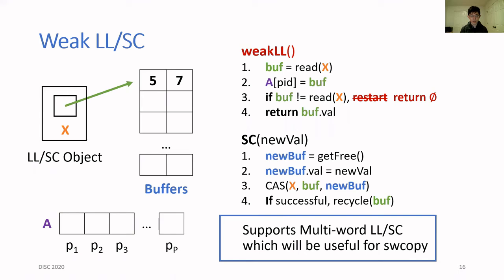Notice that if we find out on line 3 that the current value of X is different from the one we saw on line 1, then between lines 1 and 3, an SC operation must have linearized which changed the value of X. This means that instead of restarting the weak LL on line 3, we can simply return a value indicating that it failed. This algorithm can actually be extended to support multi-word weak LL/SC using single-word compare-and-swap by making the buffer span multiple words.